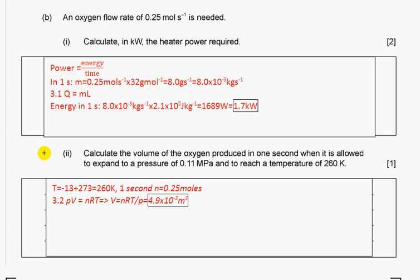Calculate the volume of the oxygen produced in one second when it is allowed to expand to the given pressure and temperature. We turn temperature in celsius into kelvin. In one second we have so many moles. Section 3.2 equation for ideal gas, we rewrite for volume and we give answer to two significant figures.